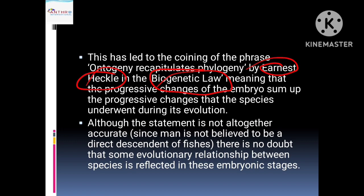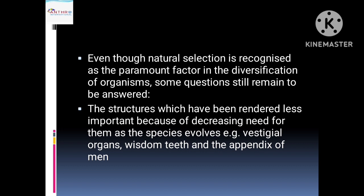This is something which most religious people deny. Even though natural selection is recognized as the paramount factor in the diversification of organisms, some questions still remained to be answered. There were some mistakes or gaps which have been completed in Neo-Darwinism. Structures were rendered less important because of decreasing needs — favorable adaptations are kept while those with no function become vestigial, such as wisdom teeth and the appendix in human beings. This was addressed in Neo-Darwinism.